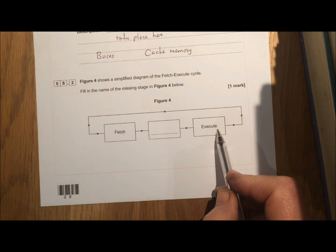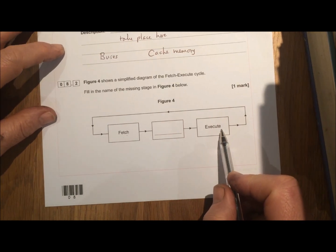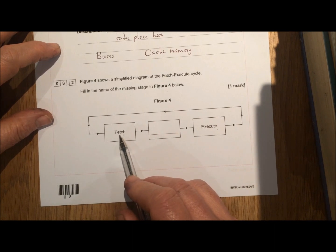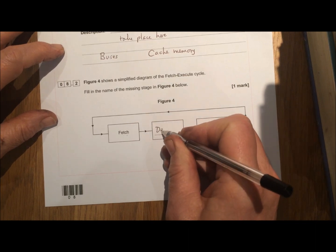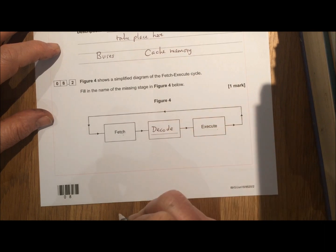The execute part of the fetch execute cycle is when the instruction is actually carried out. So between the instruction being brought in, fetched, and it being carried out, it has to be decoded. In other words, the CPU has to understand what the instruction means.